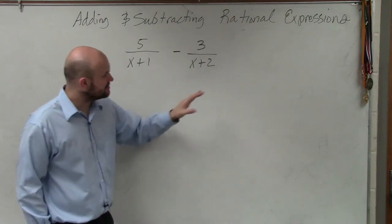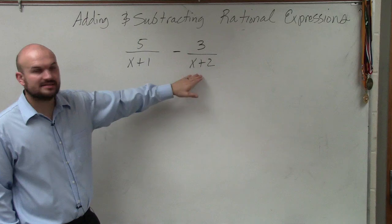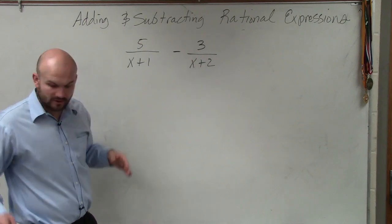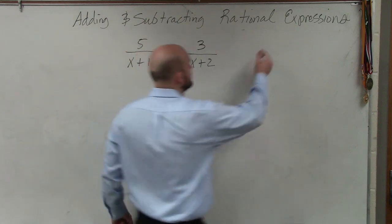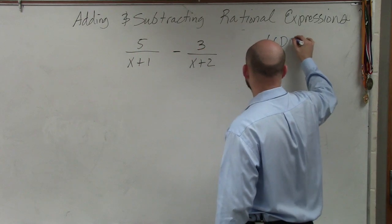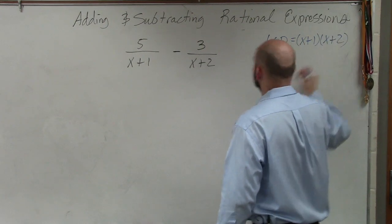However, with polynomials, if you guys look at in this case, neither one of these divides into the other. So therefore, the common denominator is just simply going to be the product. So when we say the LCD, that's going to be x plus 1 times x plus 2.